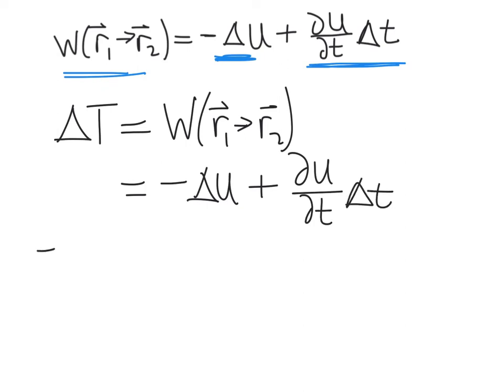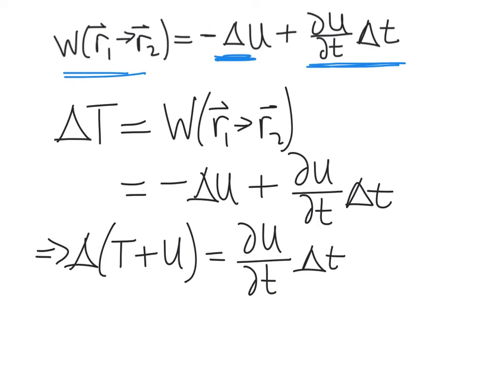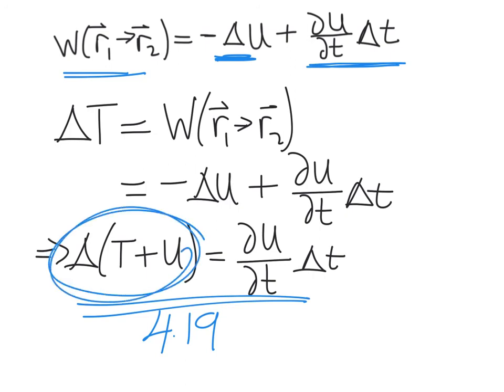And now instead of getting the change in the kinetic energy plus potential energy equal to zero, it's actually going to be equal to whatever the change in the potential energy is over time. And so this is how you would change equation 4.19 to account for the time dependence of the potential energy function. And so you can see here that if this is the total energy of the system is no longer conserved, the right-hand side is no longer zero, and so in the case of a time-dependent potential energy, the total mechanical energy of the system is not conserved.